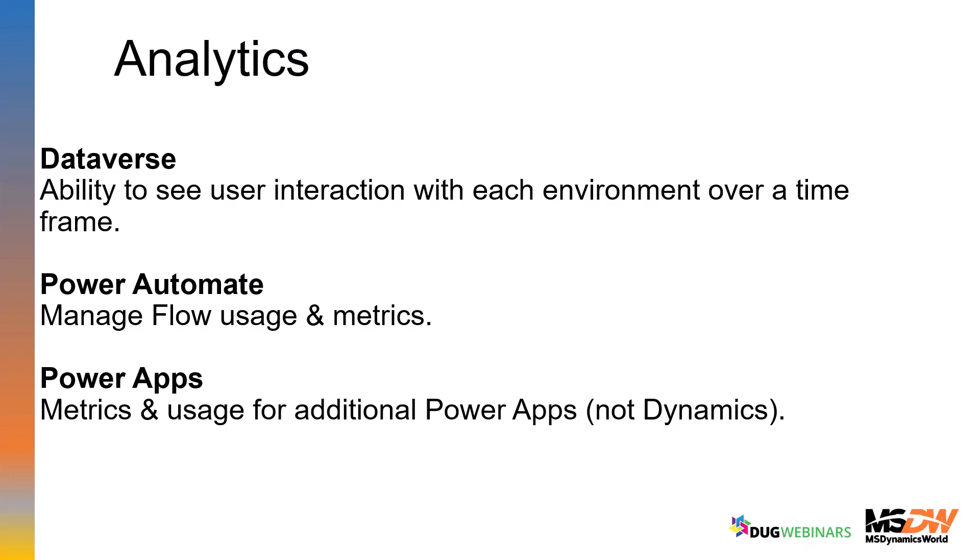The Power Automate analytics section lets you make sure you're within your usage of flows — you get a certain number of flows with your Dynamics licensing. You want to make sure you're staying under your limit and that flows are running effectively. If things are getting canceled or stuck, this is an easy place to find that information. Power Apps analytics covers apps that are not Dynamics-based, like Canvas apps, showing metrics and usage for those.